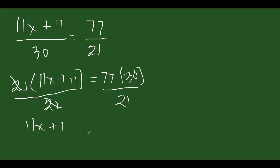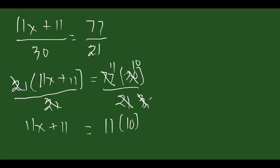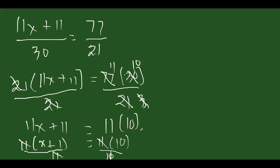We can factor out 11 on the left side, then divide both sides by 11. This gives x plus 1 equals 10, so x equals 9. We get the same value but dealt with very large numbers. The maximum number we encountered was 77, whereas the cancellation method kept numbers smaller.